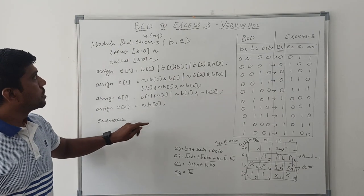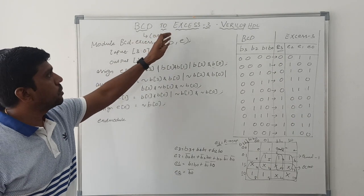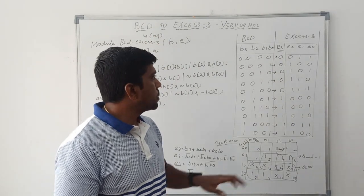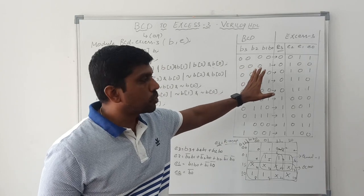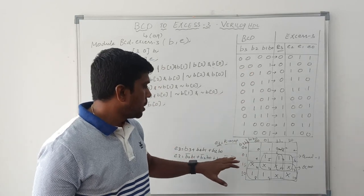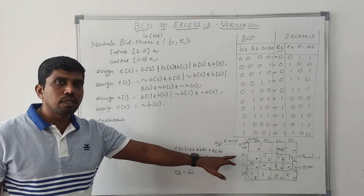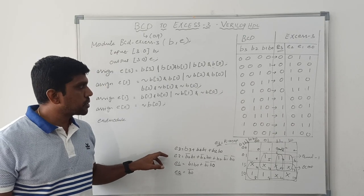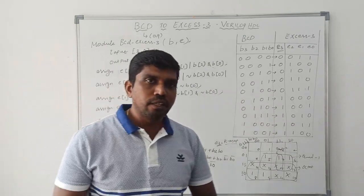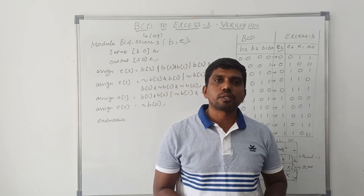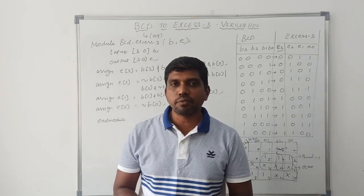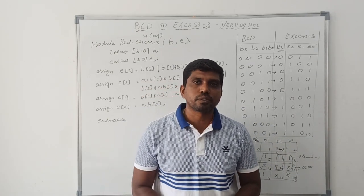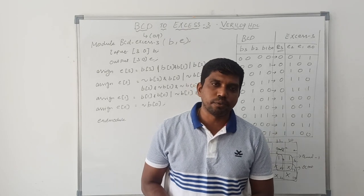This is the simple way to write a BCD to XS3 Verilog HDL program. First write the truth table, then find the boolean expression using K-map, and after finding all boolean expressions you can write the program very easily. I hope you understand the concept well. If you are watching for the first time, kindly subscribe and support us. Thanks for watching.